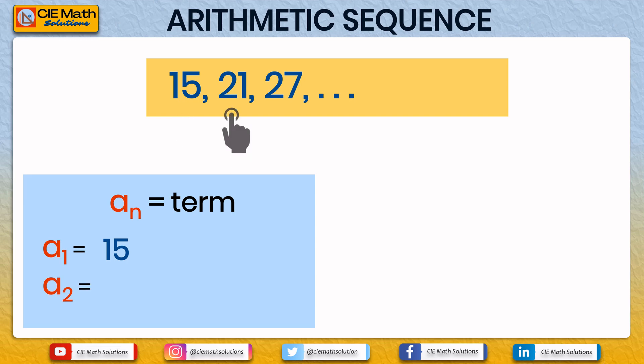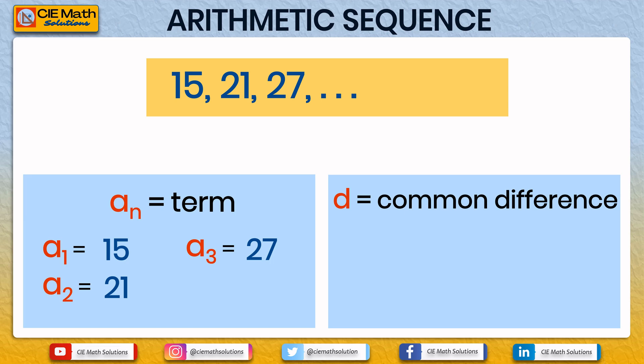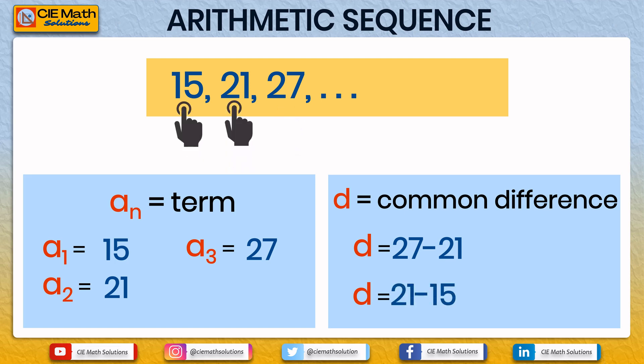In this arithmetic sequence, A1 which is the first term is 15, A2 is 21, and A3 is 27. The common difference is denoted by d. Here d is equal to 27 minus 21, or 21 minus 15, which are both equal to 6. The common difference of this arithmetic sequence is 6.